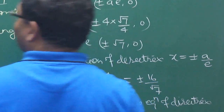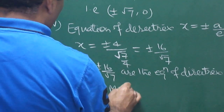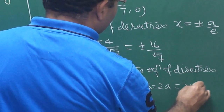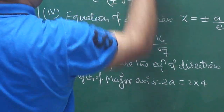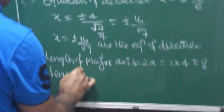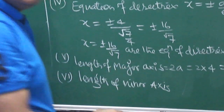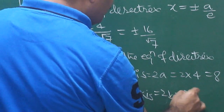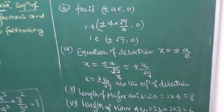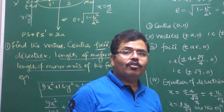The length of the major axis is 2a, that is 2 into 4, which equals 8. The length of the minor axis is 2b, and since b equals 3, the length of the minor axis is 6.